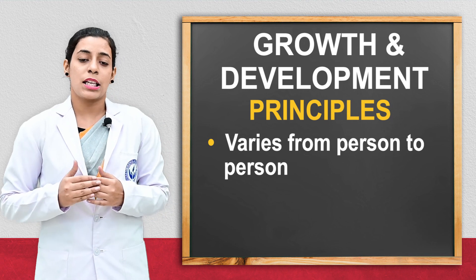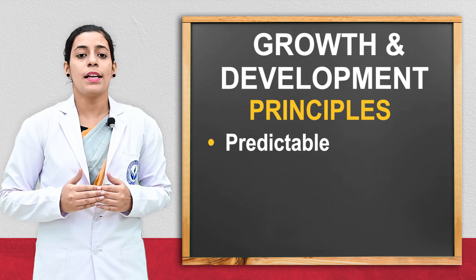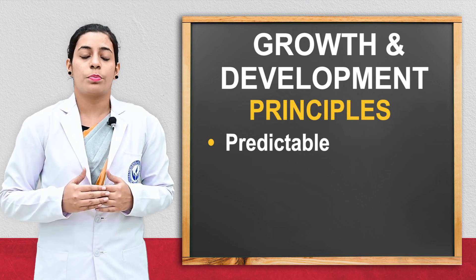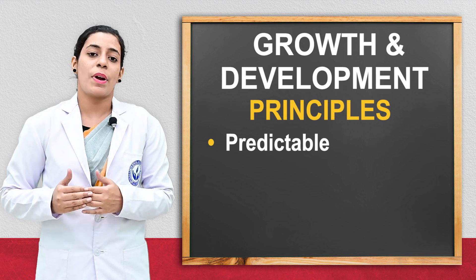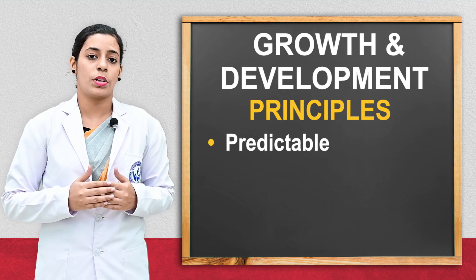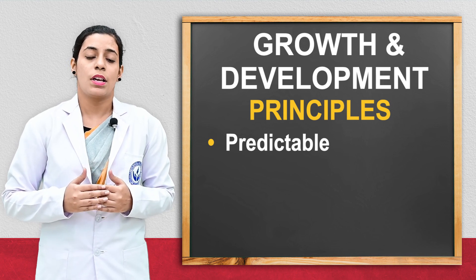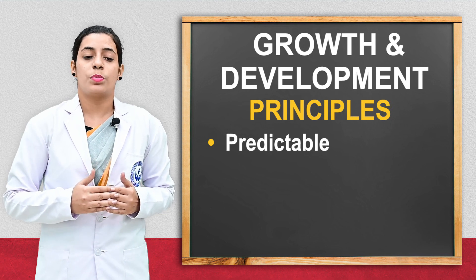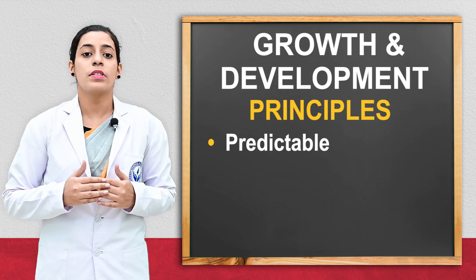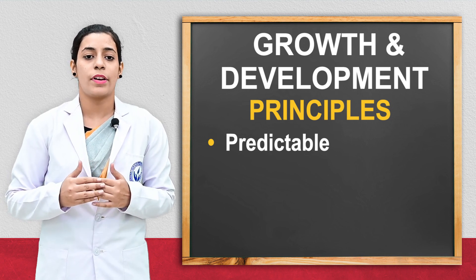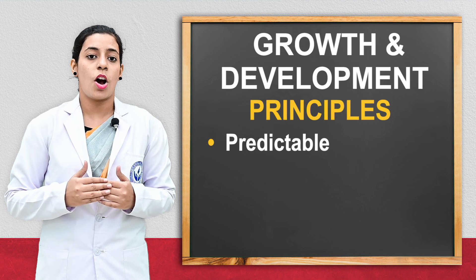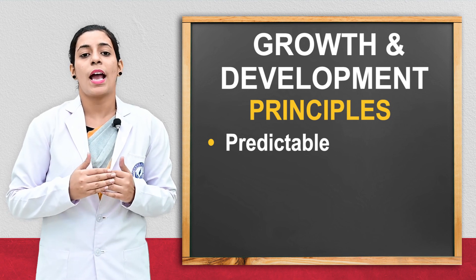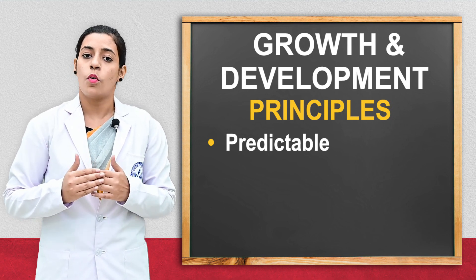The next principle is that there is a predictable pattern of growth and development. It means development follows a cephalocaudal or proximodistal pattern — it starts from the head to the foot.